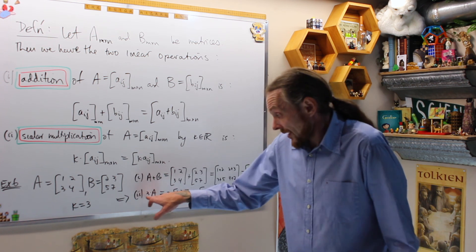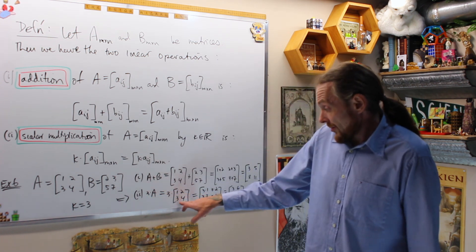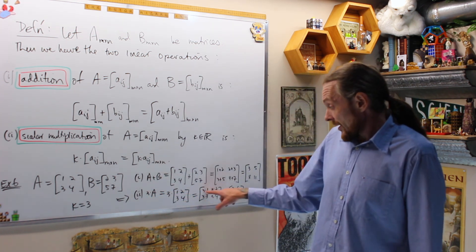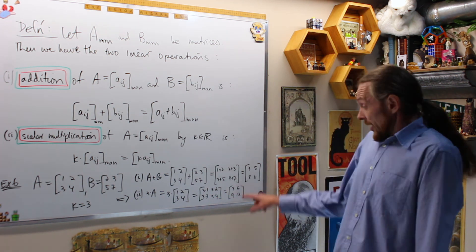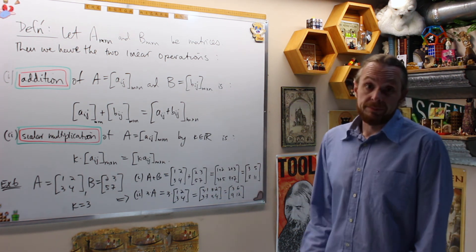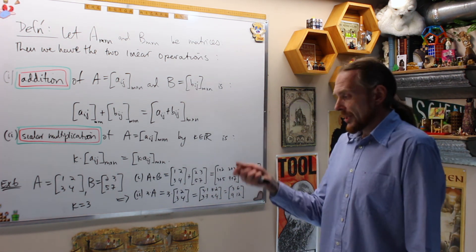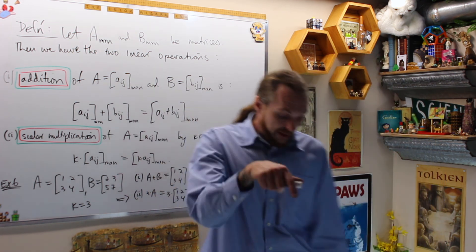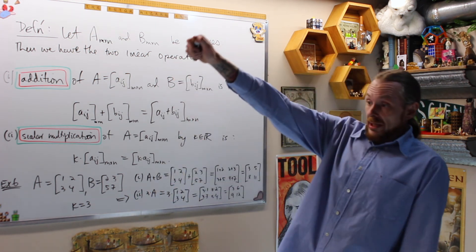Then, given a matrix and a number, three times that matrix is going to give me three times every component, and that gives me 3, 6, 9, 12, 2, 4, 6, 8, who do we appreciate? Please subscribe right here, hit the notification bell, we appreciate math wizards.